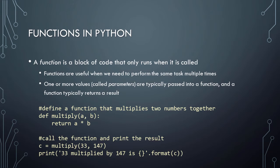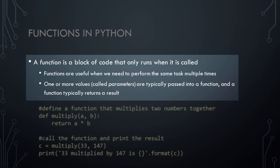Next, let's talk about functions in Python. You can think of a function as a block of code that only runs when it is called. Functions are useful when we need to perform the same task multiple times at different points in our main program code. One or more values, called parameters, are typically passed into a function, and a function typically returns a result. If you've ever used Microsoft Excel, the Python functions that we're describing here serve exactly the same purpose as functions in Excel.